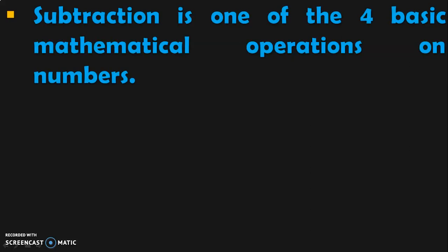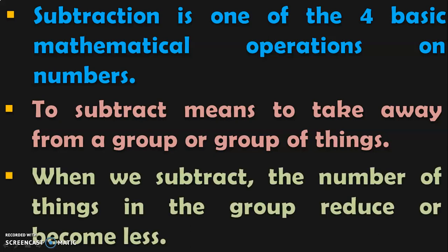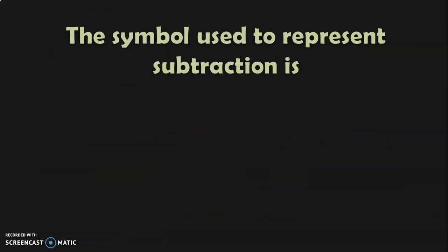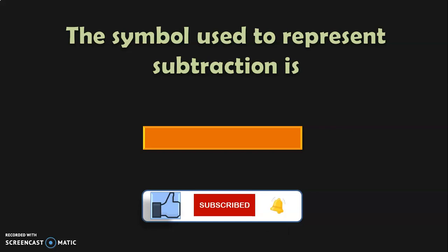Subtraction is one of the four basic mathematical operations on numbers. To subtract means to take away from a group or group of things. When we subtract, the number of things in the original group reduce or becomes less. The symbol for subtraction is a simple minus sign. Let us first do a simple subtraction sum and then go into the properties of subtraction.